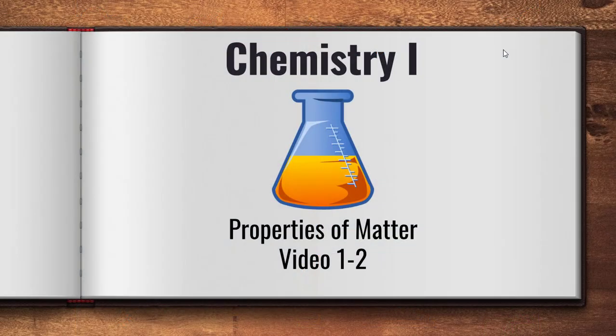Welcome back, ladies and gentlemen. I'm excited to bring you the second video in our chemistry series. In this particular video, our focus is primarily going to be on the properties of matter. If you remember from last time, we talked about how matter is essentially anything and everything in the universe — this pen is matter, this tape dispenser is matter, the earth is made up of matter — and what we're going to look at now are some of the unique properties that different types of matter have, as well as changes that can occur in matter itself.